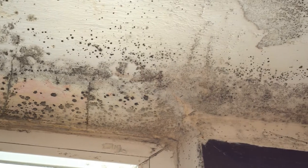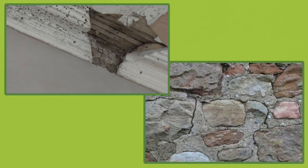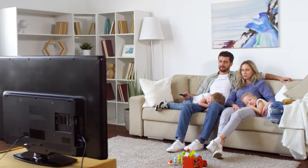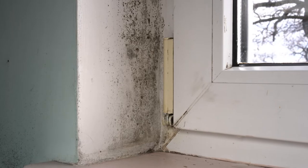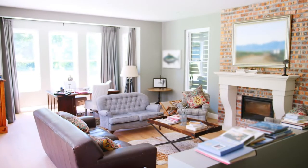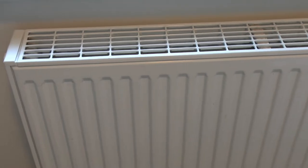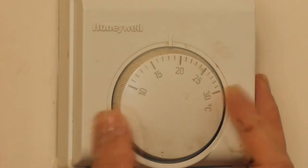Nobody likes a damp home, but there are benefits to improving the weather resilience of your home beyond aesthetic appearance and preventing unnecessary damage to the plaster and stonework. A drier home is also a healthier home, minimising the risk of conditions that can lead to mould growth and timber decay. A drier home will also be a warmer home, as wet walls lose heat quicker than dry walls, requiring less energy to heat and reducing your costs and carbon emissions.